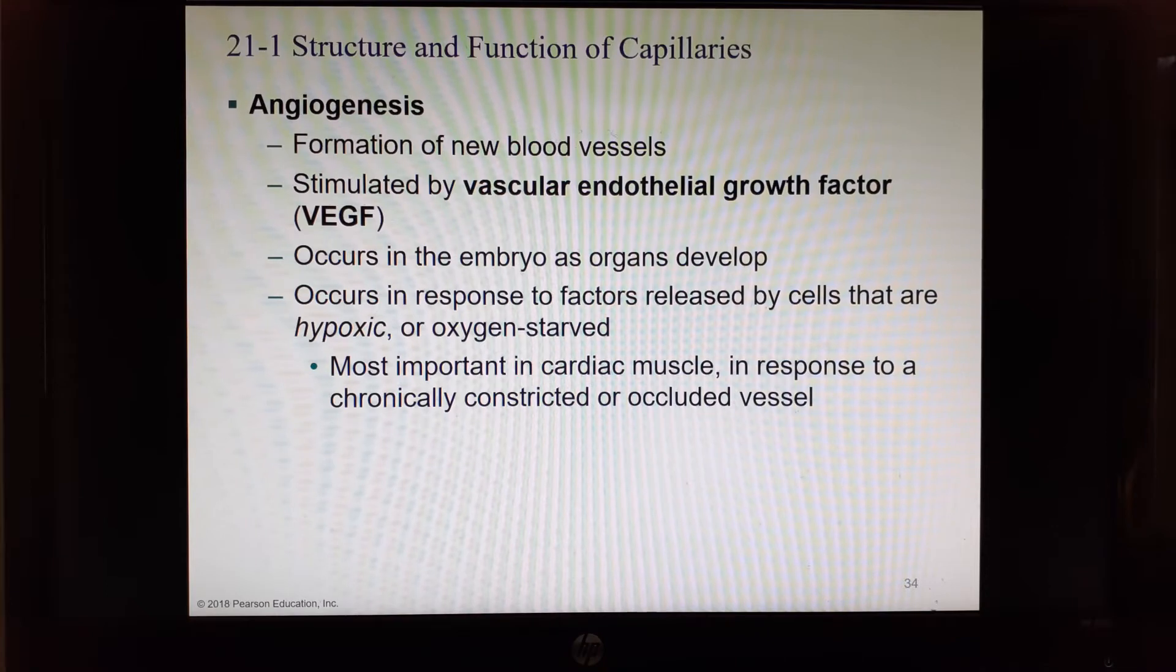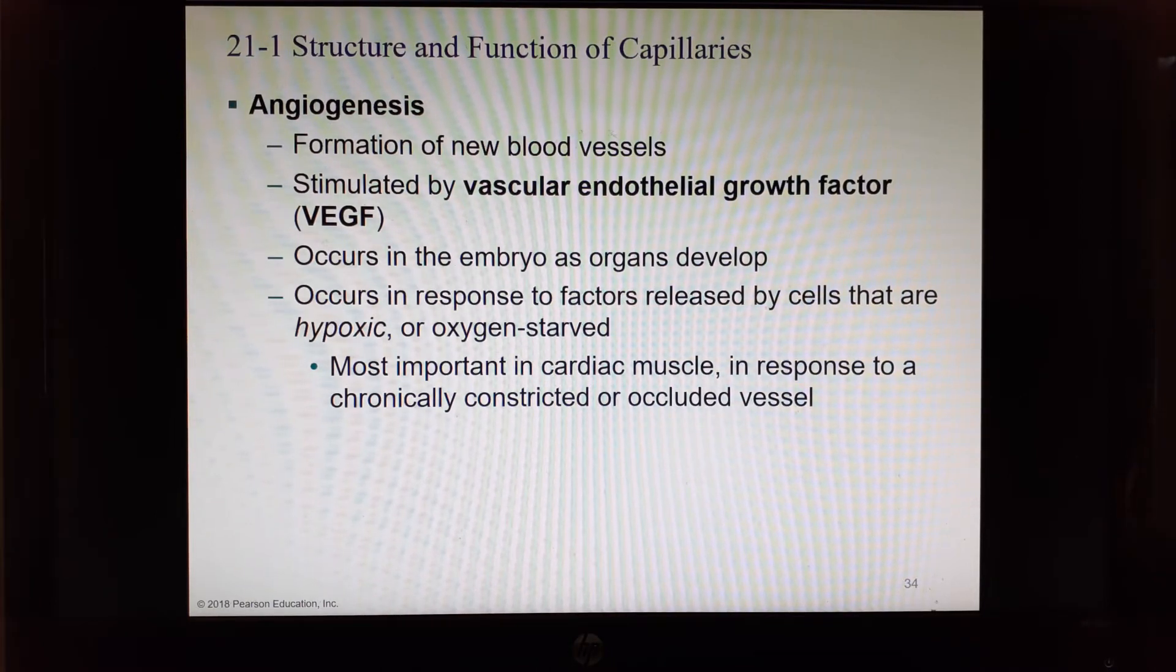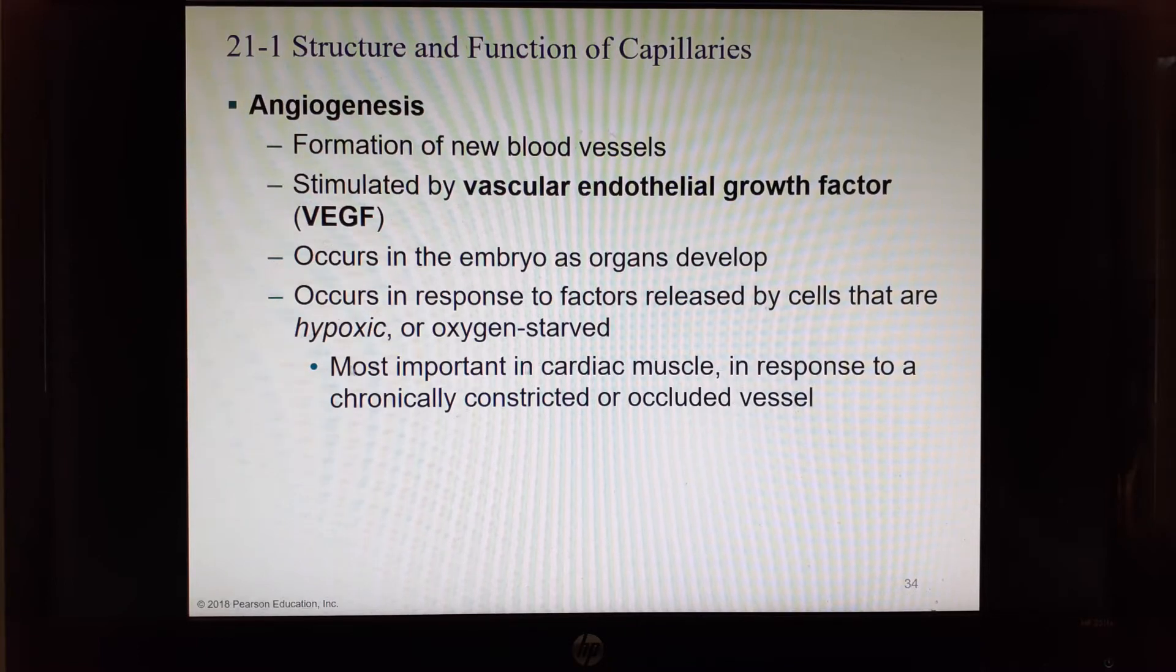Genesis means to form. Angio refers to vessels, vasculature, and the hormone that's going to start this process is vascular endothelial growth factor, often called VEGF. It happens in the embryo as you develop organs, and the organs send out this hormone that directs the growth of blood vessels. It will also occur in response to factors released by cells that are oxygen-starved.